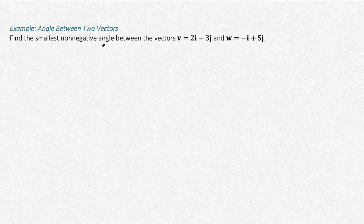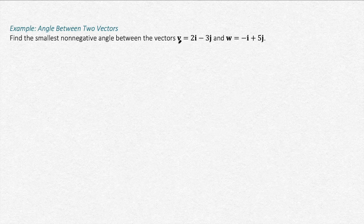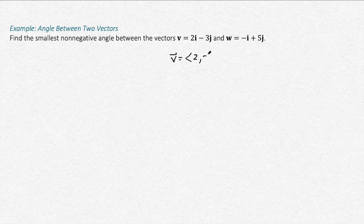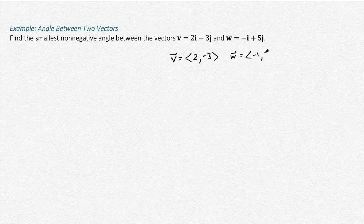Find the smallest non-negative angle between the vectors 2i minus 3j and negative i plus 5j. So first I'm going to write these in component form: 2, negative 3, and w is negative 1, 5.